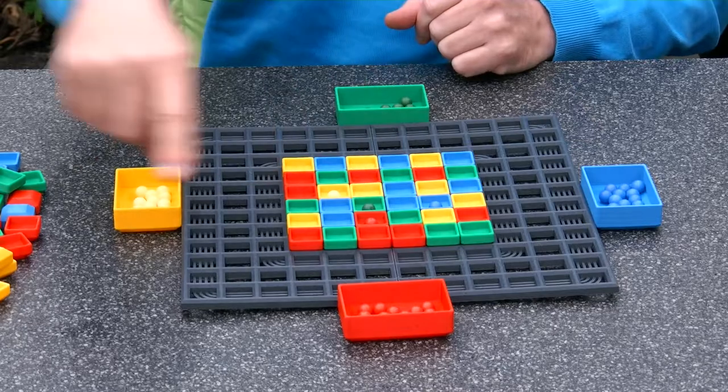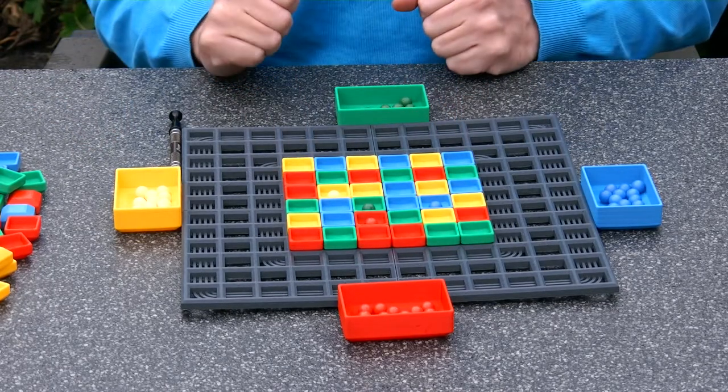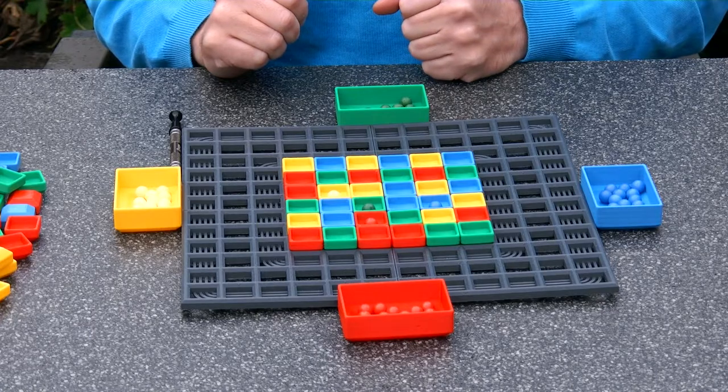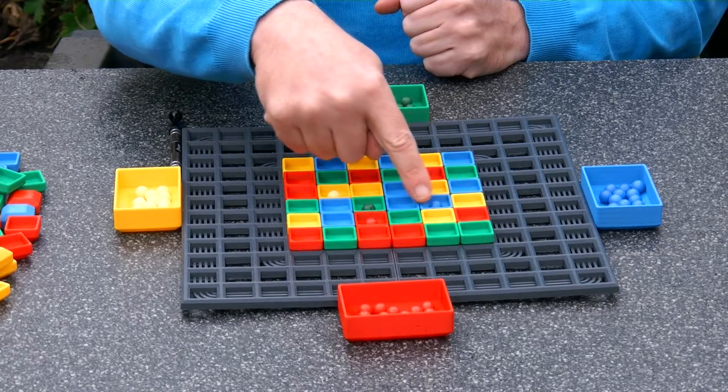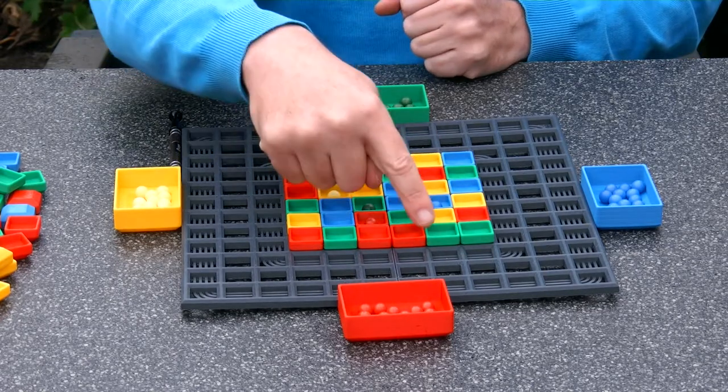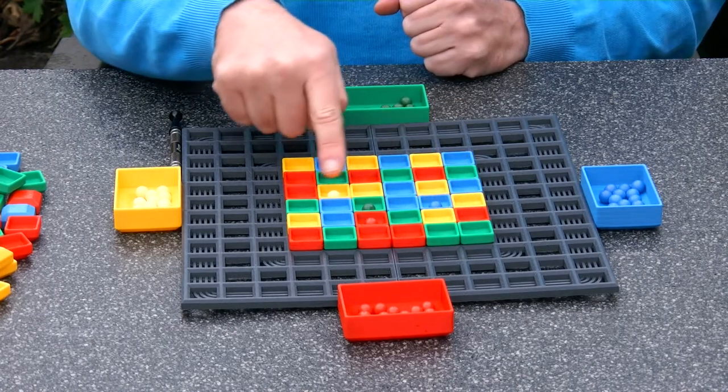So after many of these rounds at some point in time no moves are possible. And then we are going to count how many connected parts there are. So here blue has three connected squares. Red has three connected squares. Green has two of them. And yellow has two of them.